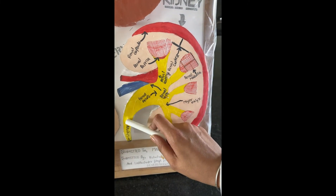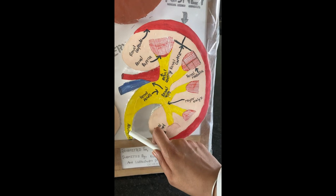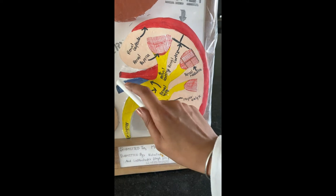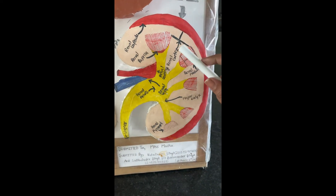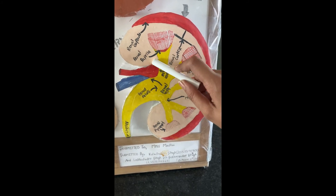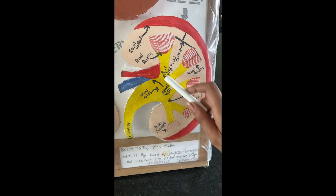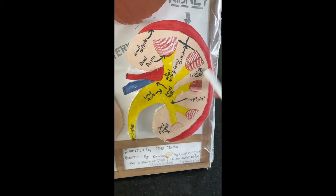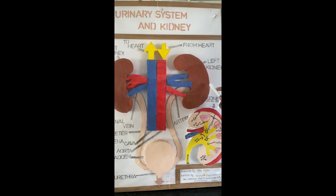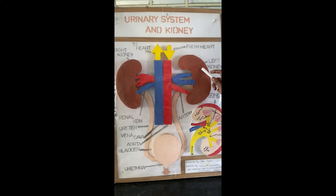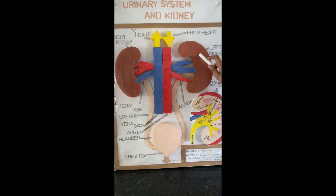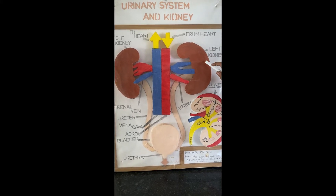The major calyx is followed by the renal pelvis. From the renal pelvis, another structure originates which is called the ureter. The ureters and the renal artery and vein enter the kidney through a common opening known as the renal hilum. Urine is formed by the functional units of the kidney, which are known as nephrons.